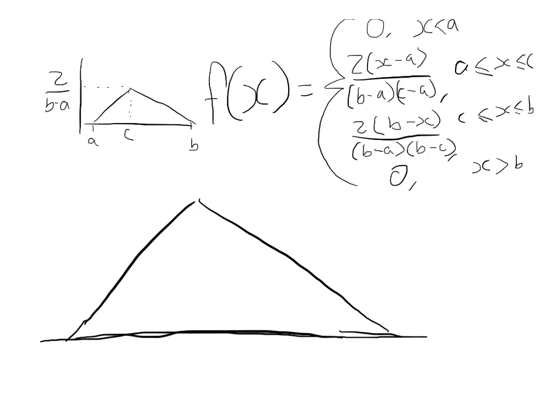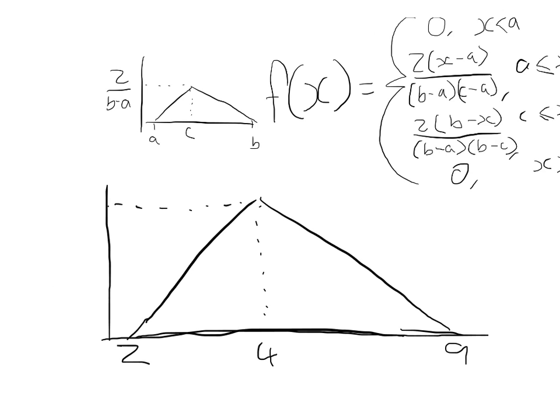We're going to start with a basic one where we have a nice distribution function that starts at two, ends at nine, and has a peak at four. The first thing we want to know — before we even look at the question — is what's the height. Our height in this situation is going to be 2 over (b minus a), so that's 2 over (9 minus 2), which is 2/7. That's the height of the whole function.